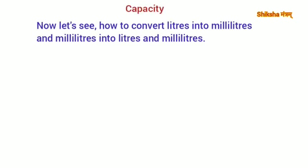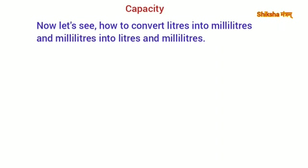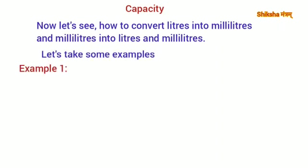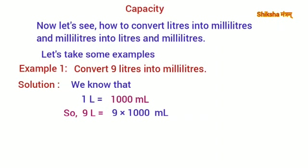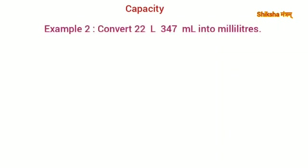Let's see how to convert liters into milliliters and milliliters into liters. Example 1: convert 9 liters into milliliters. We know that 1 liter equals 1,000 milliliters, so 9 liters equals 9 × 1,000 = 9,000 milliliters.